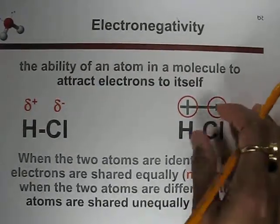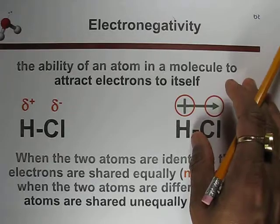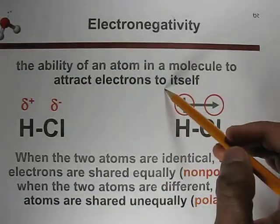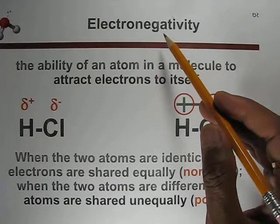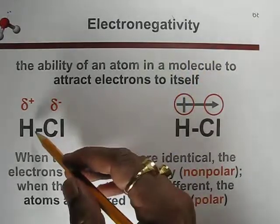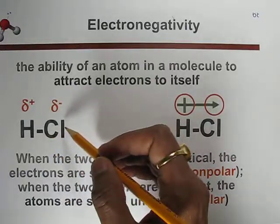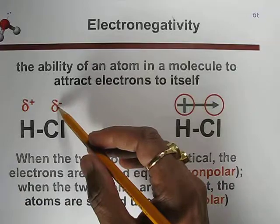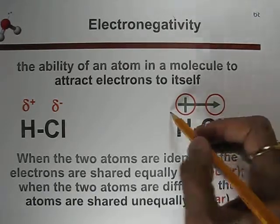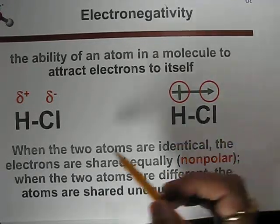The polarity occurs because of electronegativity — a new term to understand. Electronegativity is the ability of an atom in a molecule to attract electrons toward itself. For example, in HCl, chlorine has more electronegativity so it pulls the electron from hydrogen toward itself, gaining a partial negative charge while hydrogen gets a partial positive charge. The vector of polarity goes from positive to negative, and the bond in HCl is a polar covalent bond.